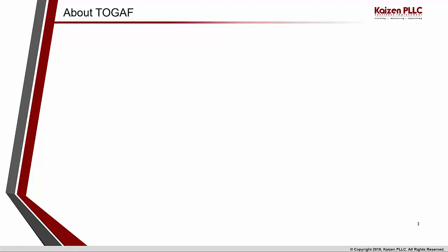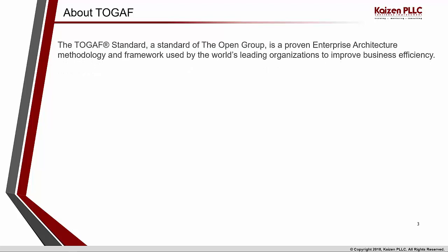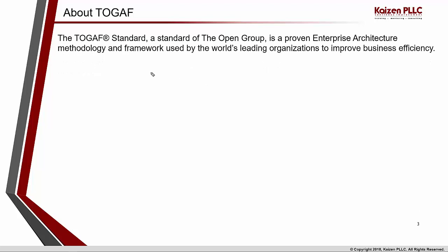First and foremost, let us define what we mean by TOGAF. TOGAF is a standard — a standard from the Open Group — and it is a standard for enterprise architecture. TOGAF is a proven enterprise architecture methodology and framework, which is owned by the Open Group, wherein the world's largest organizations use it to improve their business efficiency.